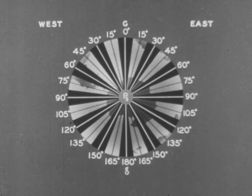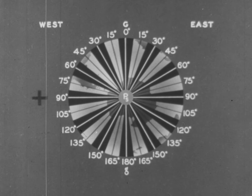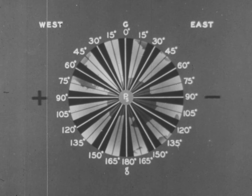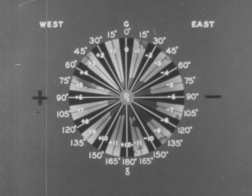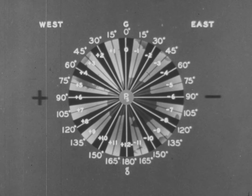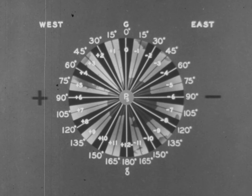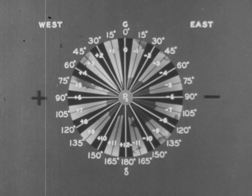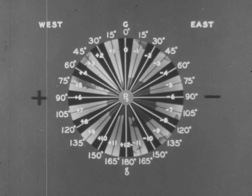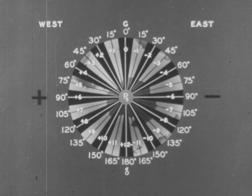These zones have been designated plus in west longitude and minus in east longitude. Each zone is also named by a number called the zone description, which is equal in value to the longitude of the central meridian of the zone converted into hours. Each zone extends seven and one-half degrees east and west of the central meridian.